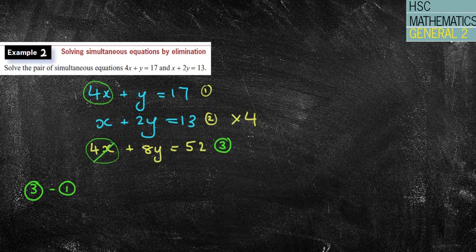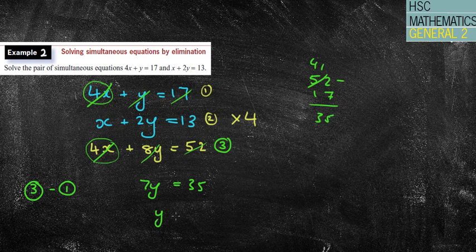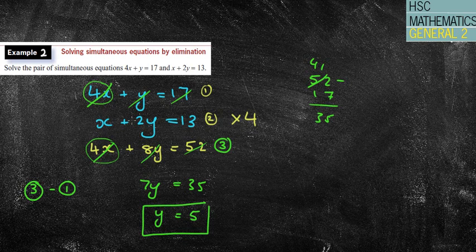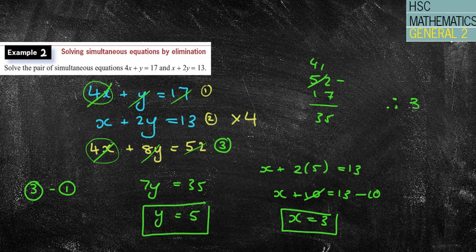So 4x take away 4x is 0. 8y take away 1y is 7y. And 52 take away 17. I don't have my calculator here, so let's have a quick crack. 4, 12 take away 7 is 5, so that's 35. And then y equals 5. So I've got a nice solution there. Now, the good thing is I can use any of these 3 equations to put them back into. I'm going to use a second one because it probably looks the easiest. x plus 2 lots of 5 equals 13. x plus 10 equals 13. Take away the 10. x equals 3. I've got my solution. Therefore, my solution is 3, 5.